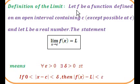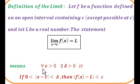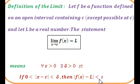Let me go through and read this definition. We're going to let f be a function defined on an open interval containing c, except possibly at c, and let l be a real number. The statement: the limit of f of x as x approaches c is equal to l. The more abstract-looking way of saying this: for all epsilon greater than 0, there exists a delta greater than 0, such that if the absolute value of x minus c is greater than 0 and less than delta, then the absolute value of f of x minus l is less than epsilon. Let's take a look at a graph.